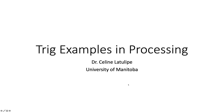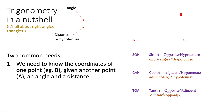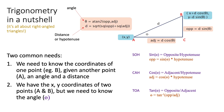Hi, I'm Celine LaTulip and in this video I'm going to go through a couple of trigonometry examples in Processing. Here are some images that show trigonometry and the relationship of the right angle triangle. We have a right angle triangle with a point A and a point B, a distance between them and an angle.